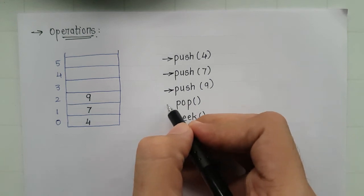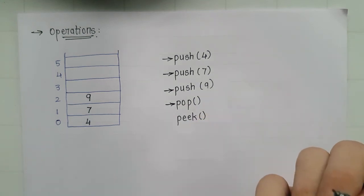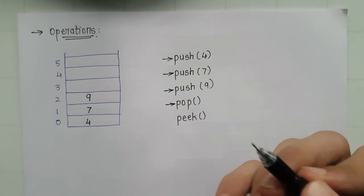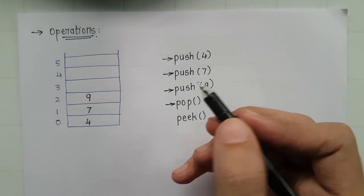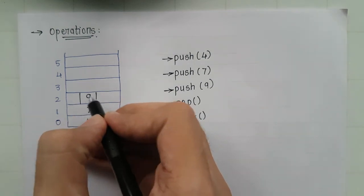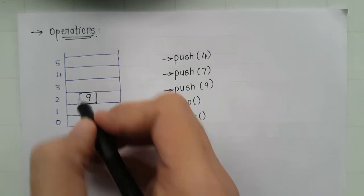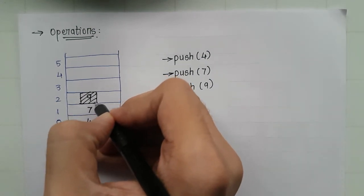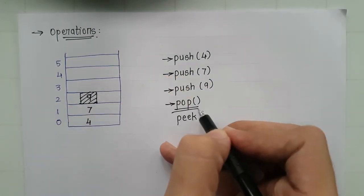So now here comes our pop function. So pop function deletes the topmost element. So now what's the topmost element here? It is 9. So this element would be deleted after performing pop function.